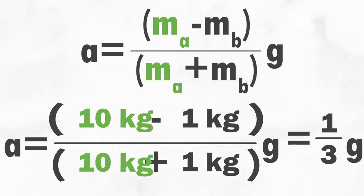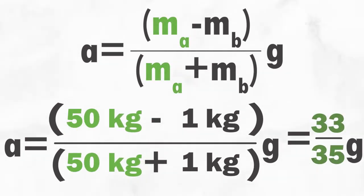As mass A increases, the difference between mass A and mass B also increases, so the ratio of this difference to the total mass increases. As we see in the equation, this means a greater acceleration.